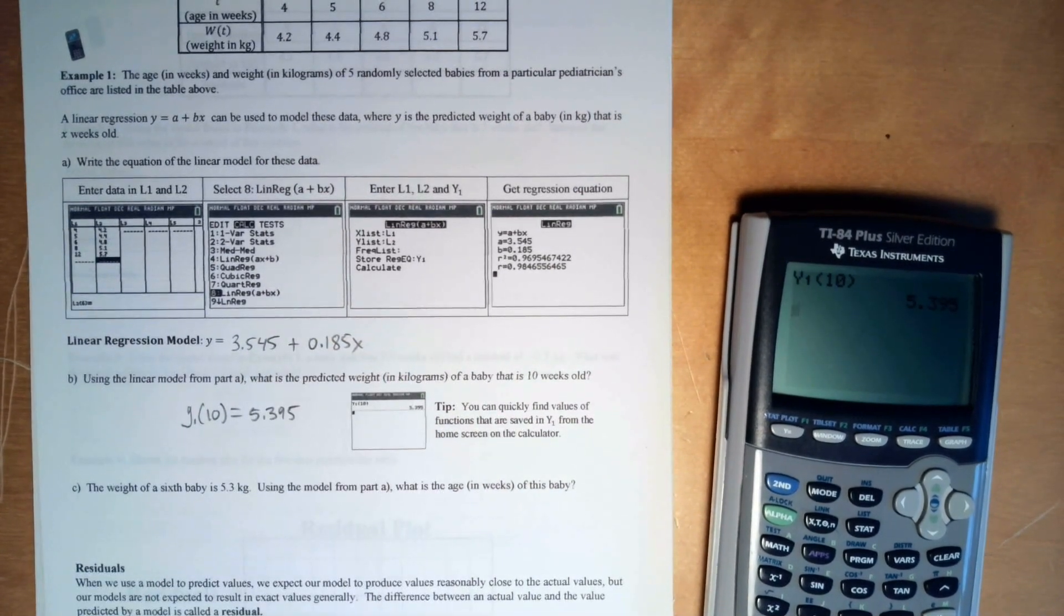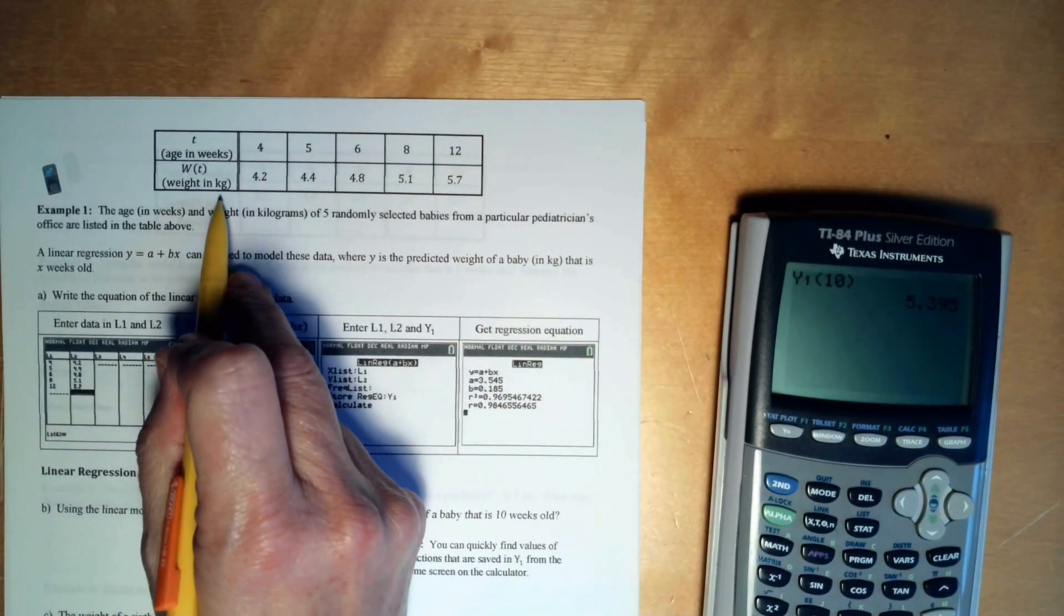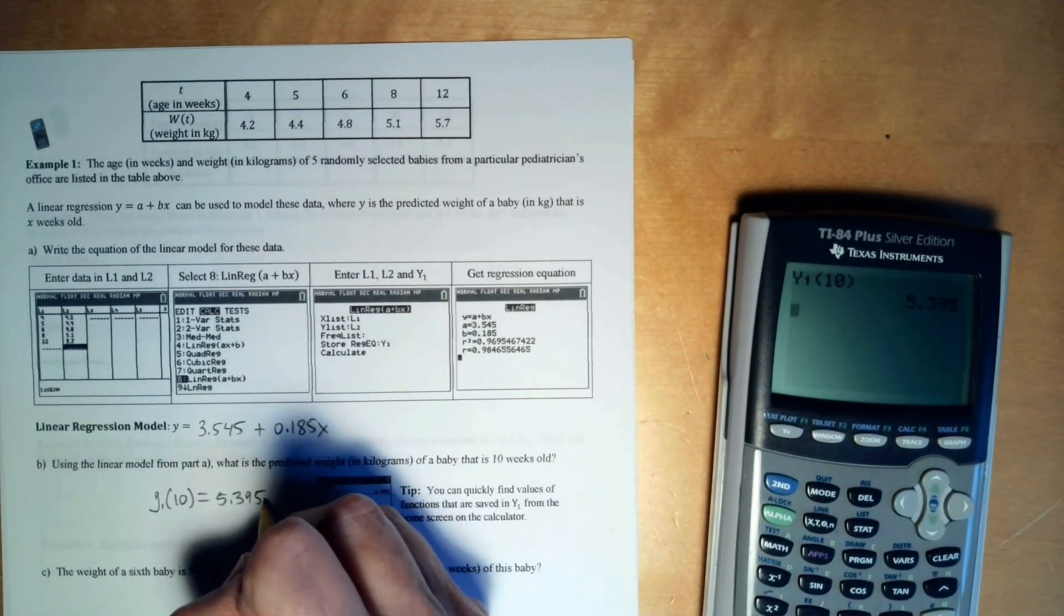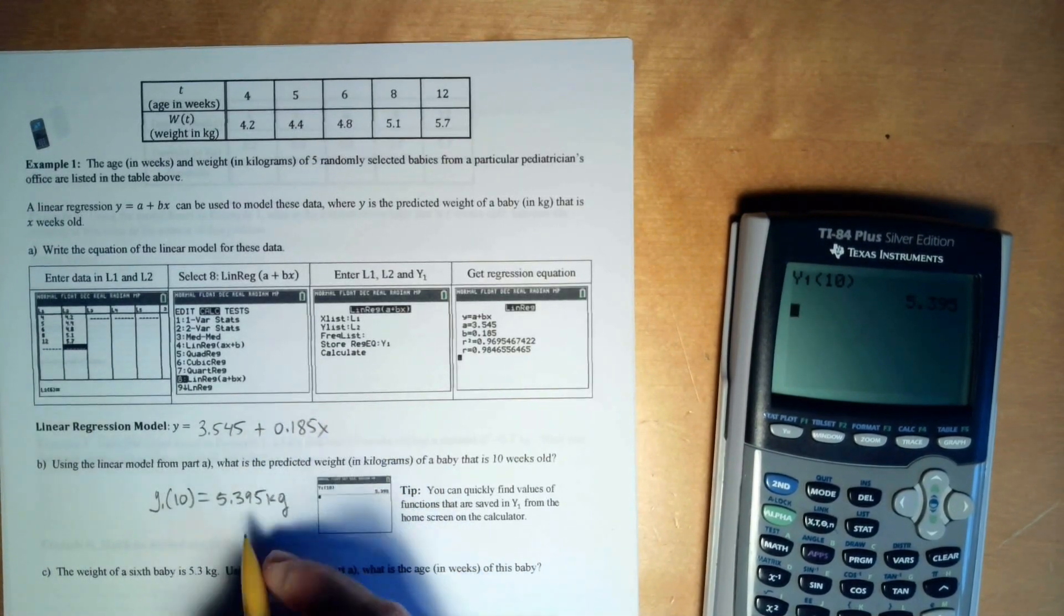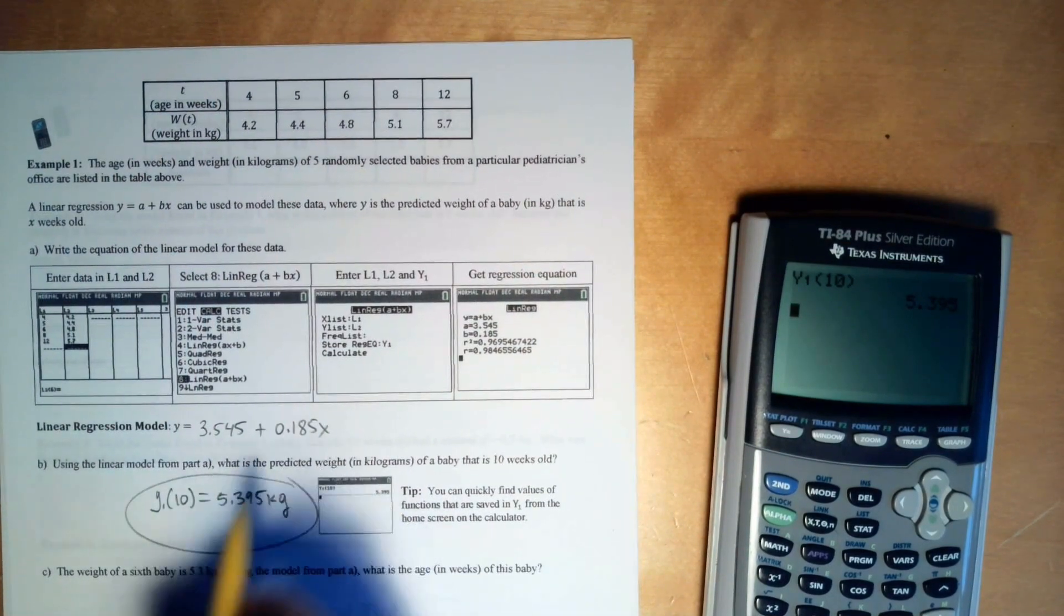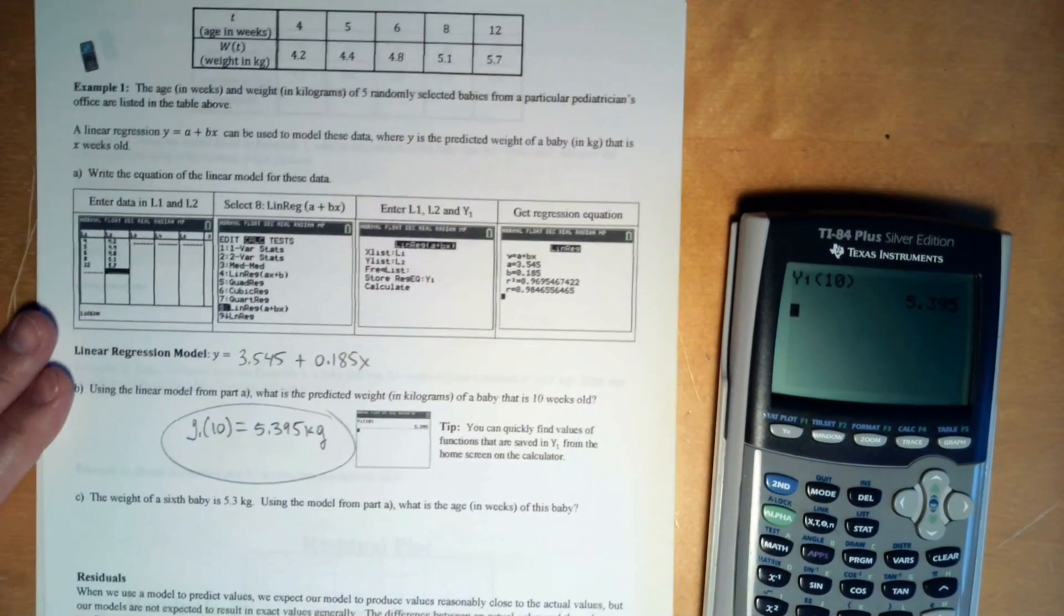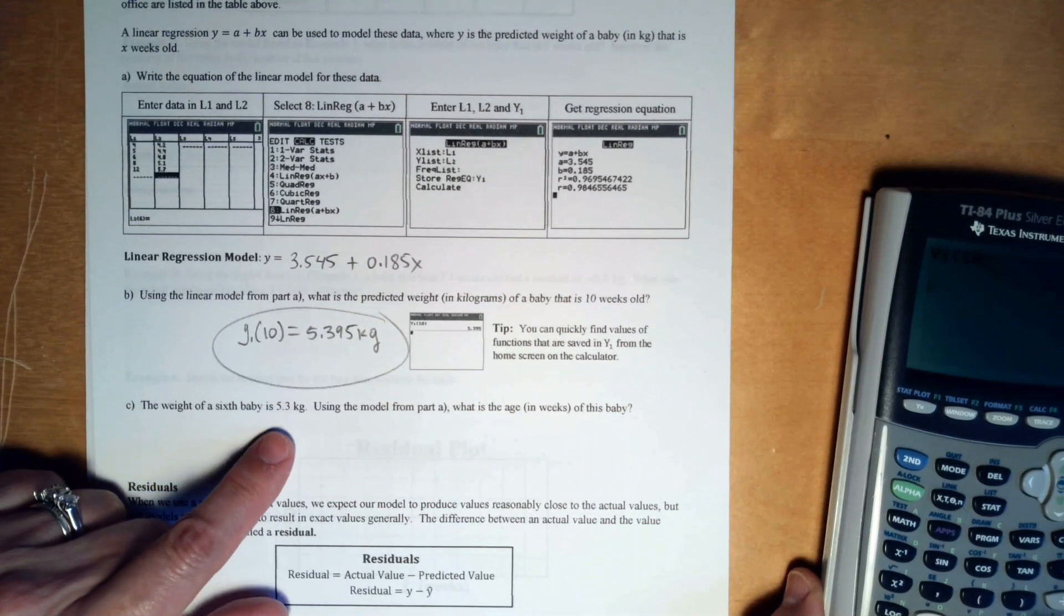And always put a label. There's like word problems, right? So this is the baby's weight in kilograms. I was going to say pounds. That would be weird. The weight of baby is 5.3.